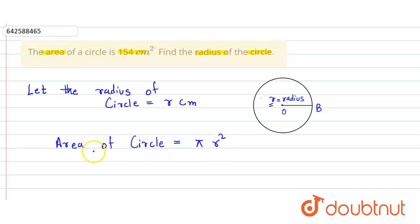So now we simply put the value. Area of circle is given to be 154 cm square. So here it is 154 equals the value of π, which is 22 divided by 7, into r squared.